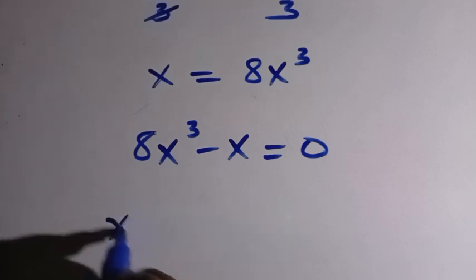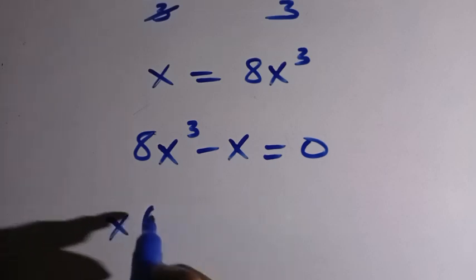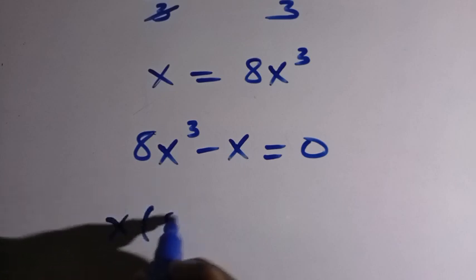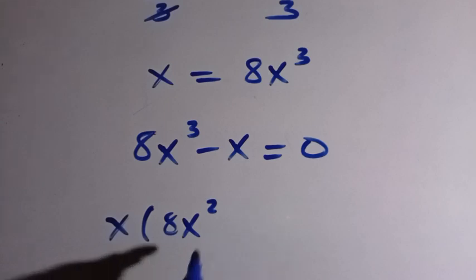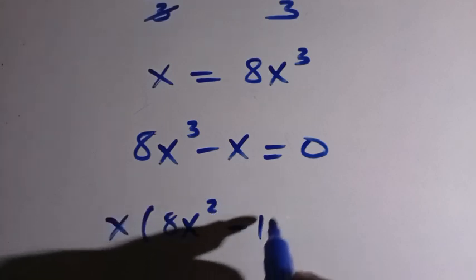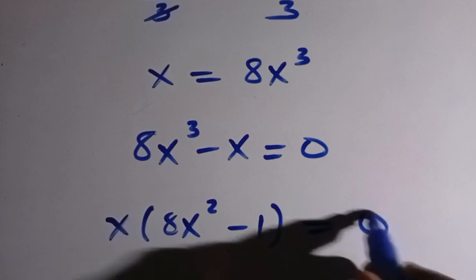So let's factor out x in the brackets. When we divide this one by x, we get 8x squared. And we divide this x by x outside the brackets here, we have minus 1 equals 0.